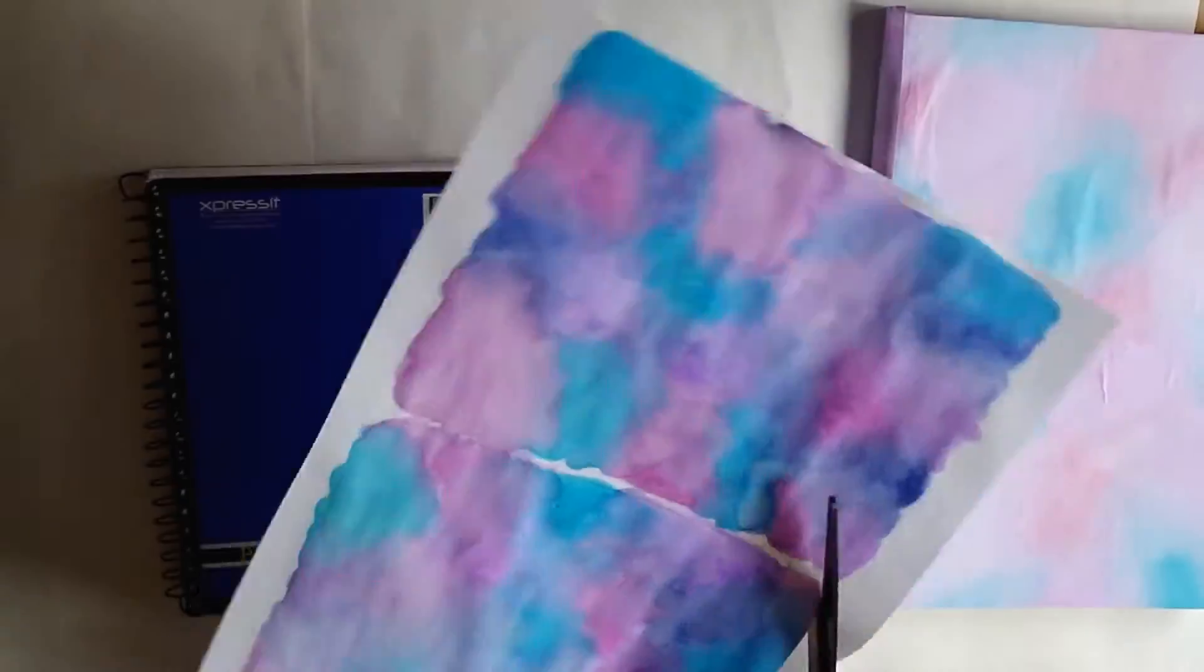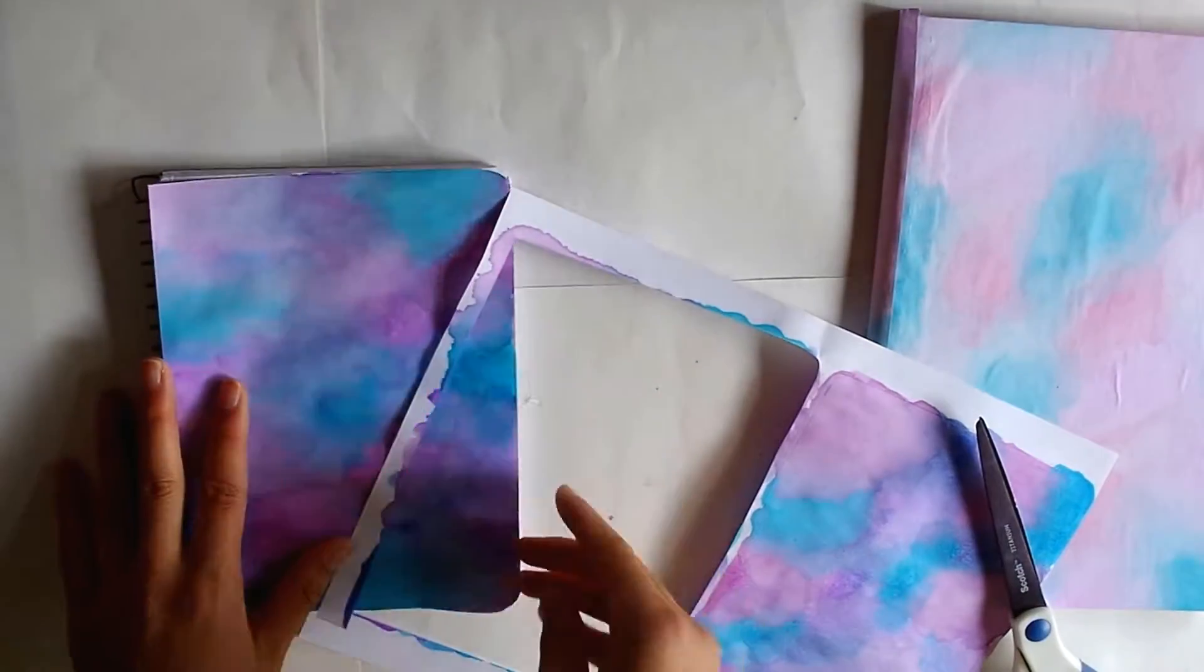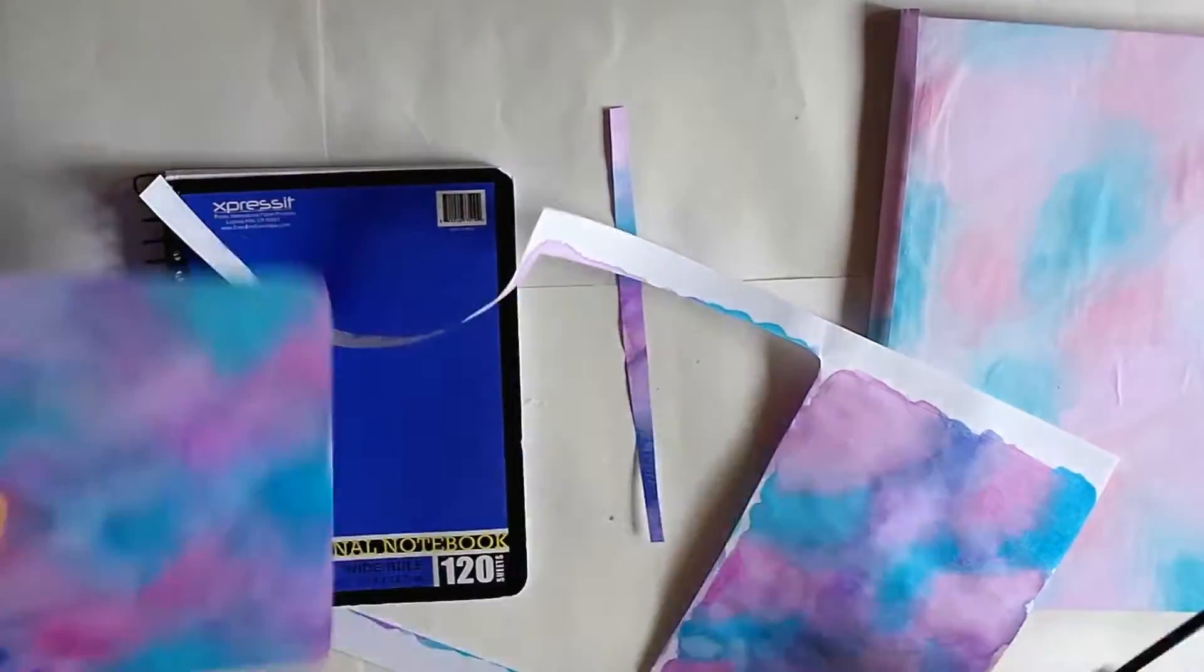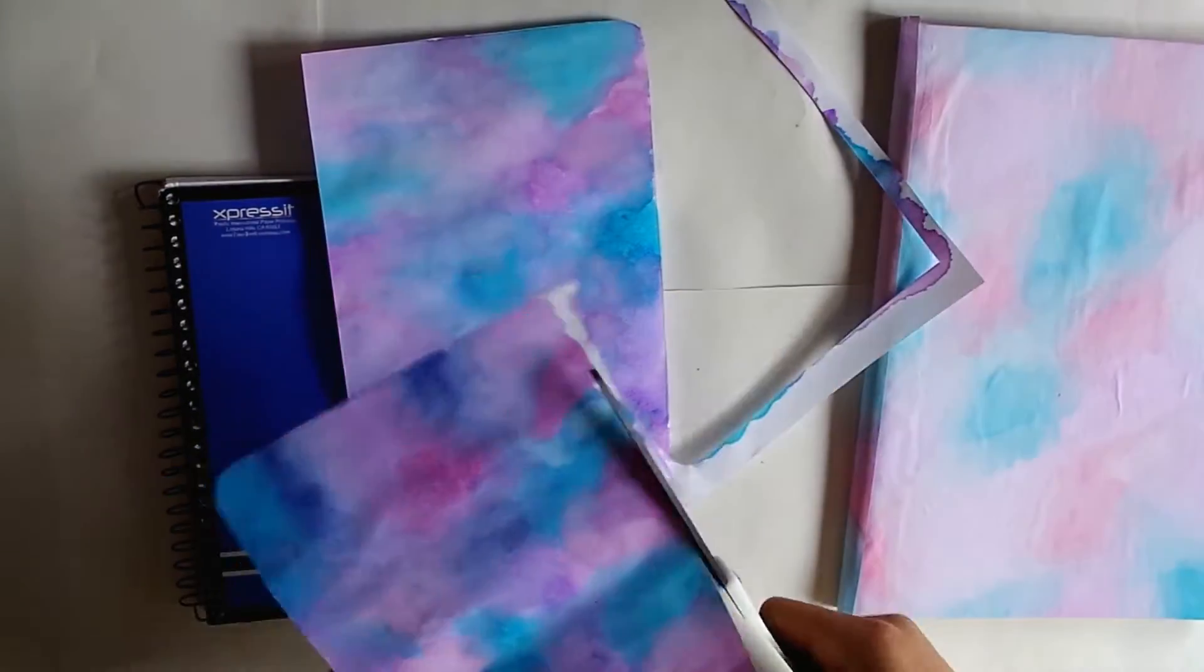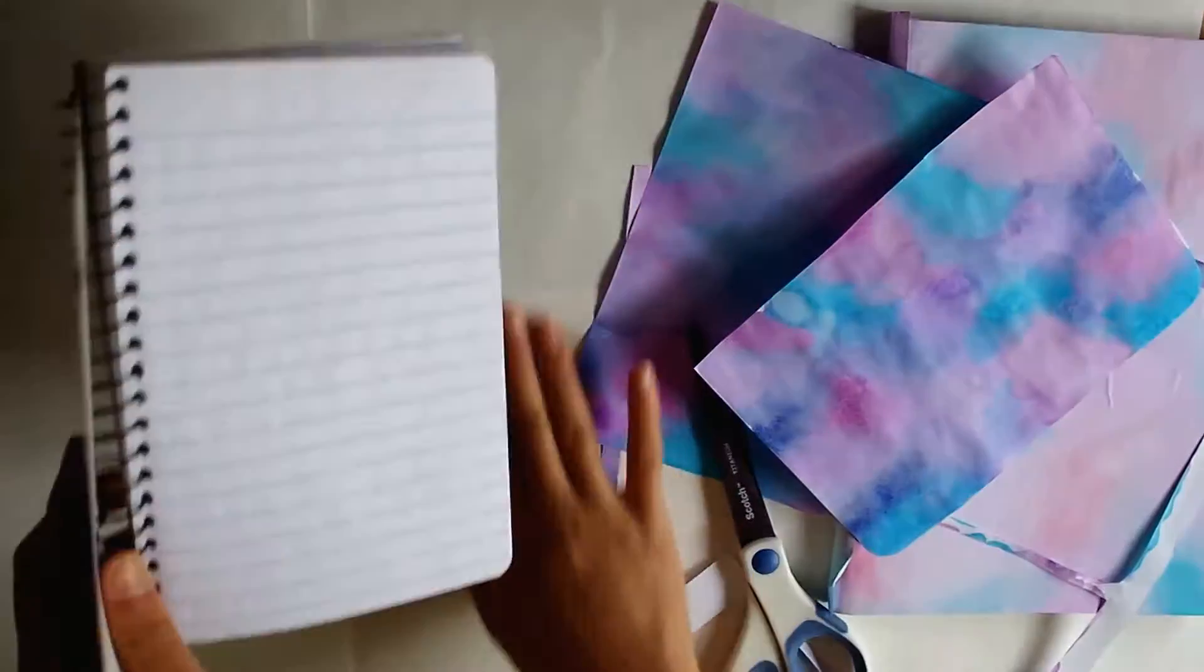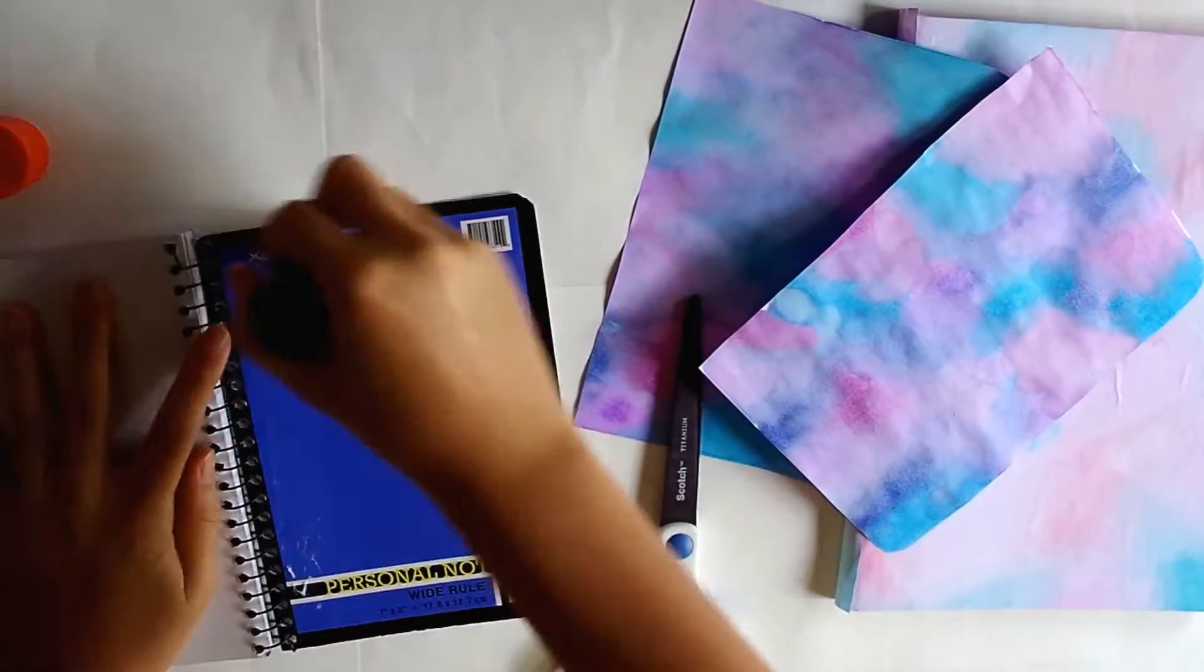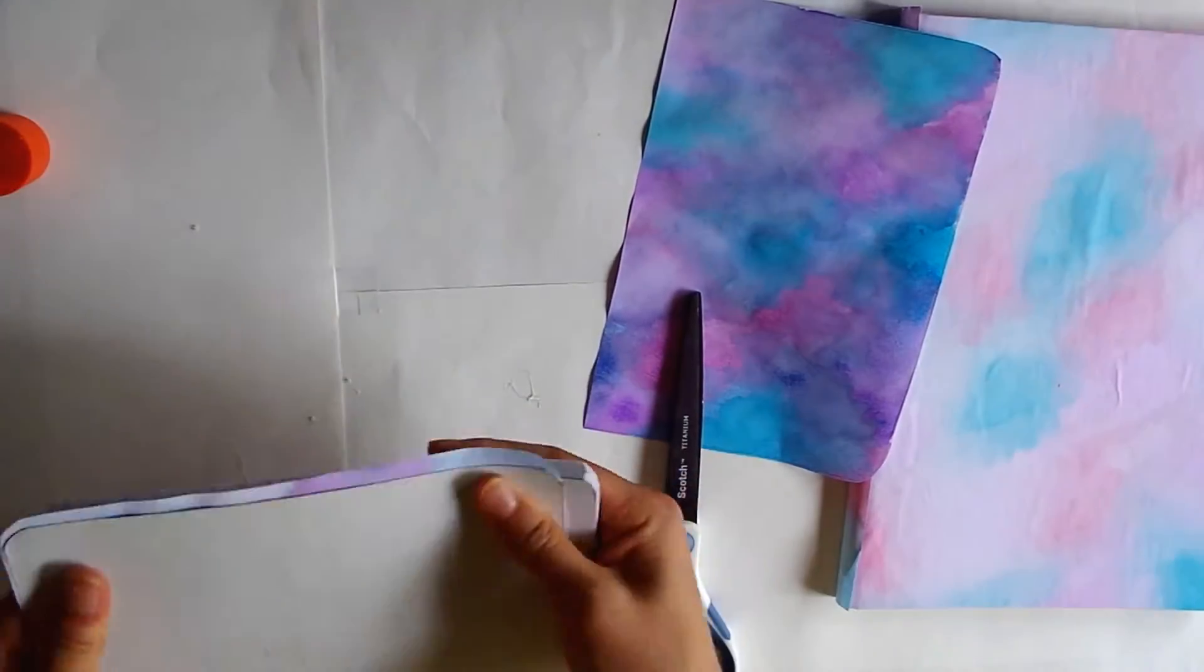For smaller notebooks, cut out a rough shape that you drew prior to painting the paper. See, I told you you should have drawn it. No, I didn't. For smaller, especially spiral notebooks, you want to make sure that the watercolor paper is exactly the size of the notebook cover. This is so you don't end up covering the spiral part of the notebook.